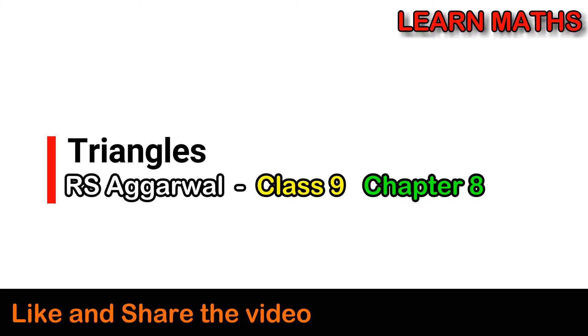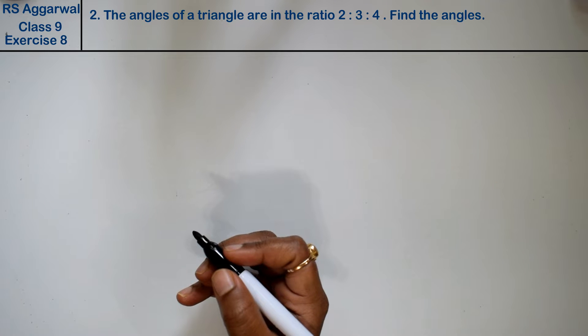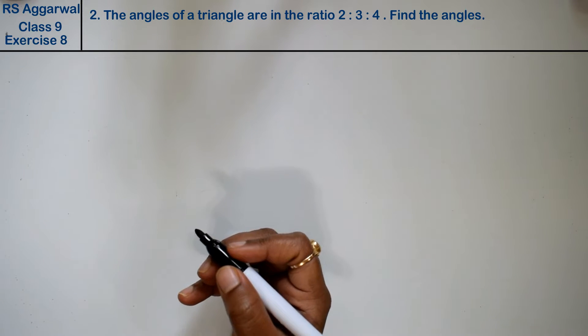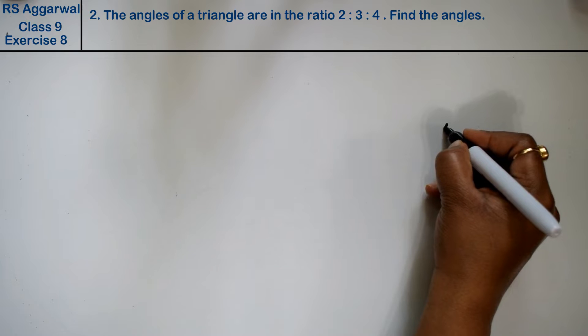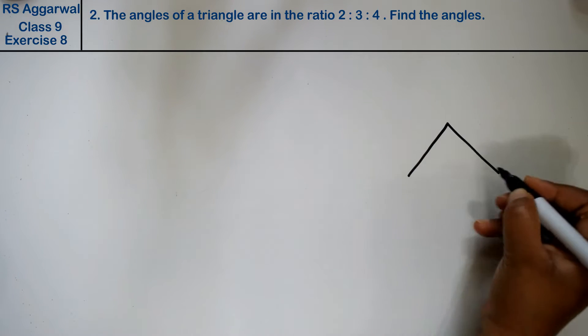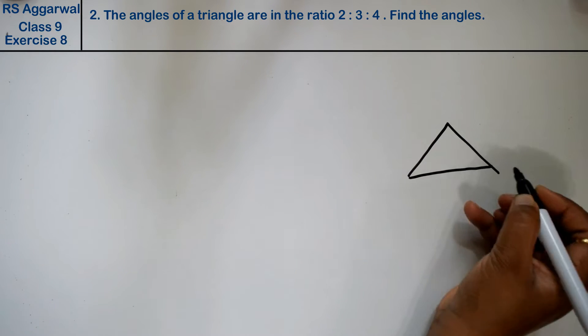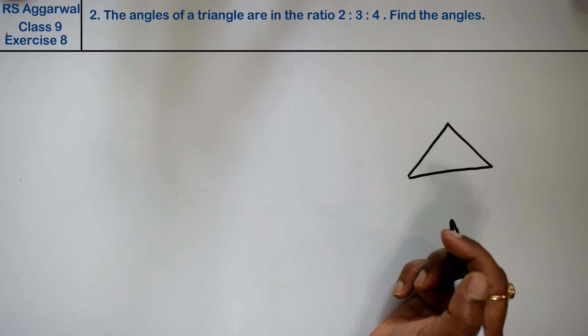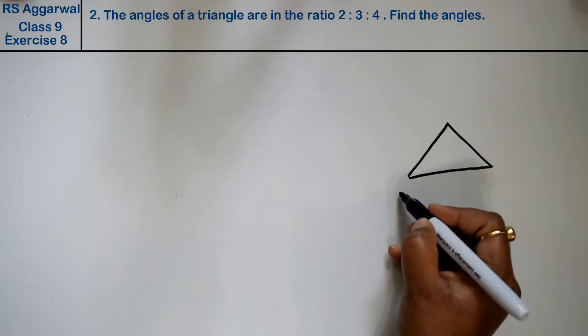Let's do question number two of exercise eight on triangles. The question states: the angles of a triangle are in the ratio 2:3:4. Find the angles.